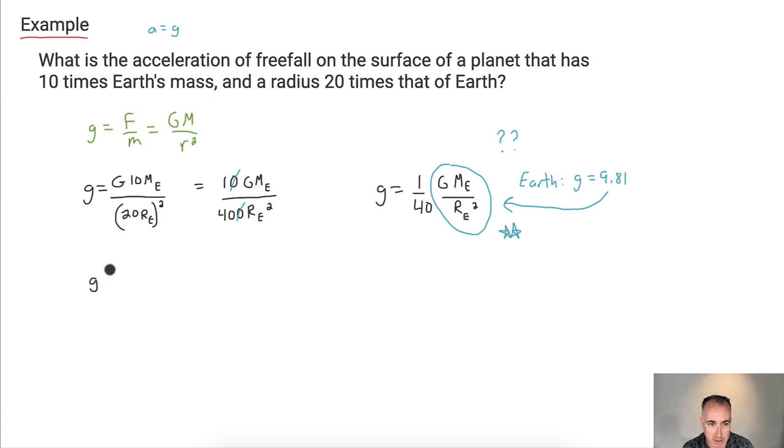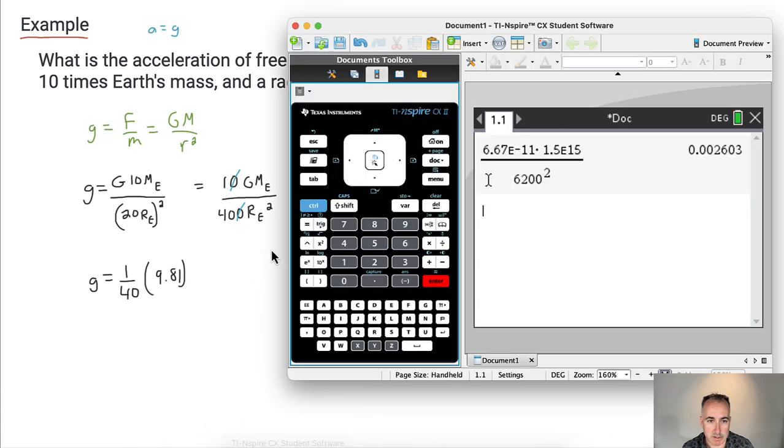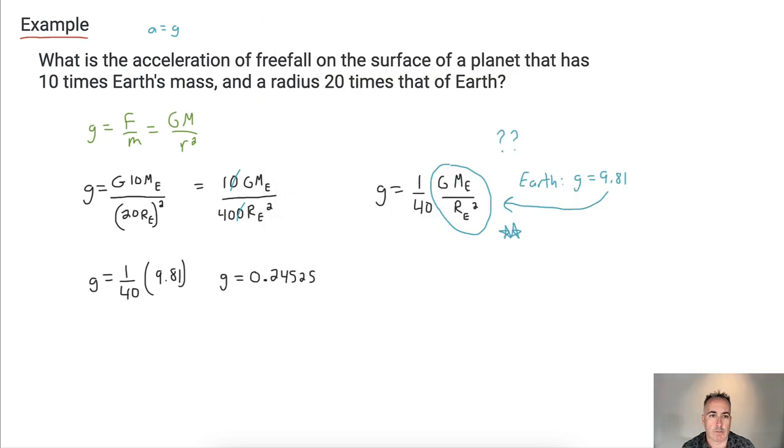So that means then we say, well, then g is just going to equal 1 over 40 times 9.81. Because we knew that as at least the acceleration due to gravity on Earth. And so if we put in this one right here, we just have 9.81 over 40. So let's just do that. 9.81 divide that by 40. And we end up with 0.24525.